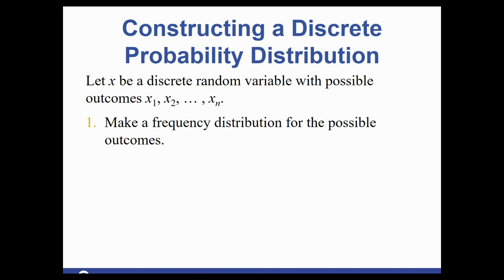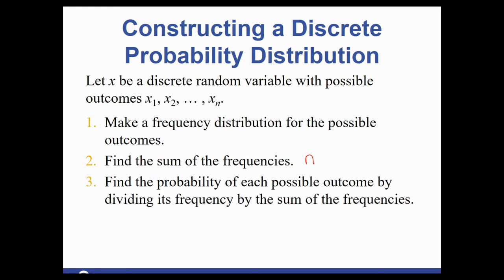Once you have a probability distribution, we could graph with it. We could make some inferential statements from it. But in order to make one, you start with a frequency distribution for possible outcomes. You find the sum of those frequencies, that would be your sample size n. Then to find the probability of the possible outcome, you are dividing the frequency by the sum of frequencies.